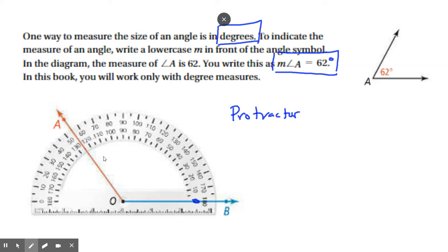Now, this is an obtuse angle, this angle AOB. It goes beyond 90. So, we're going from zero, past 90, 100, 110, 120. And it lands right between 120 and 130.